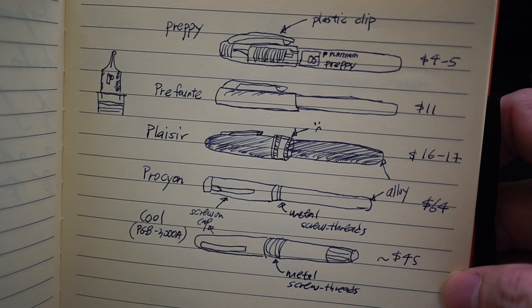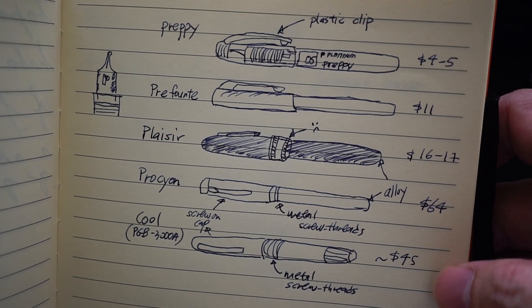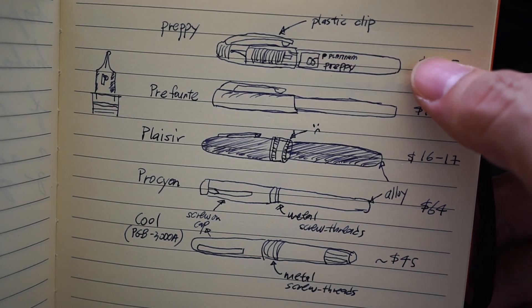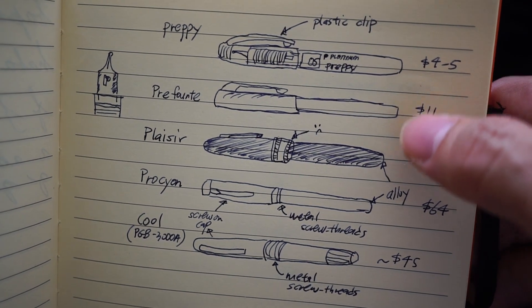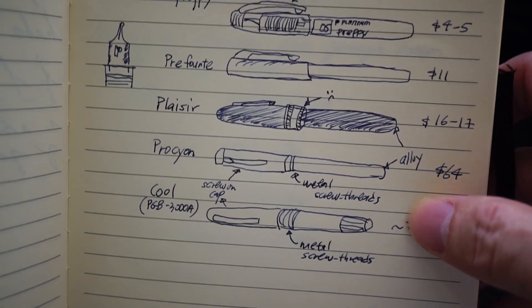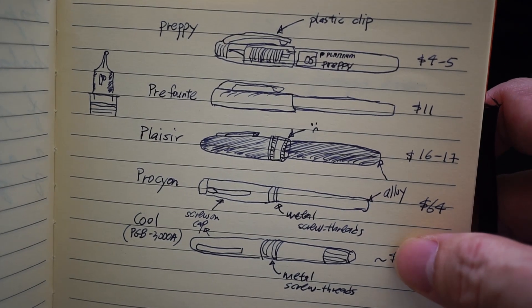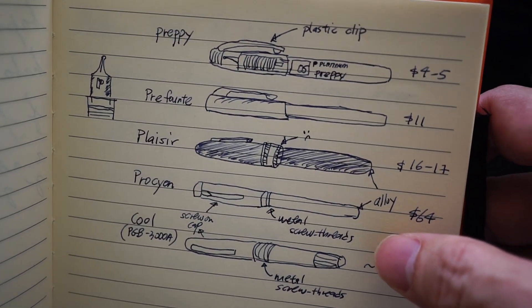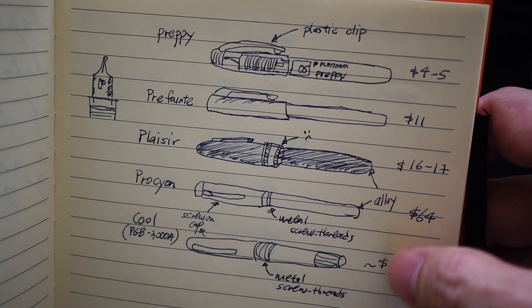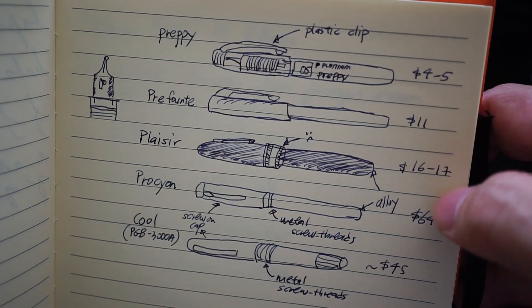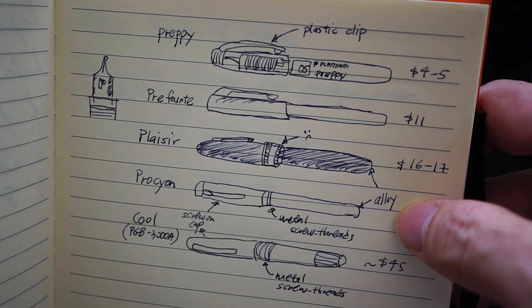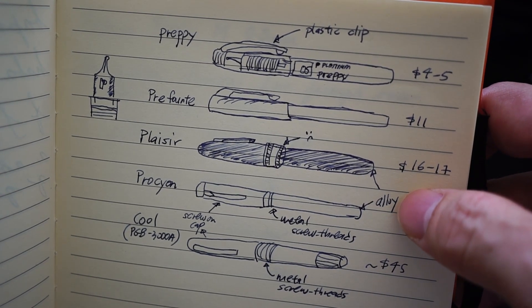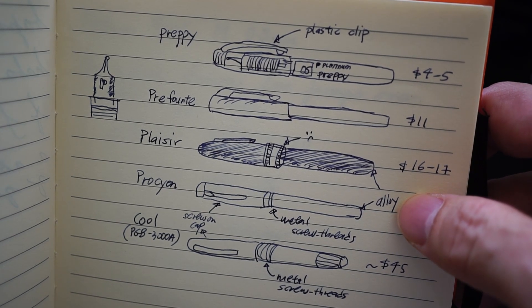Some characteristics of this lineup: the Preppy, the Prefonte, and the Cool all have kind of clear plastic demonstrator-like characteristics to their design. The two pens that are alloy are the Placer and the Procyon, and that's notable.